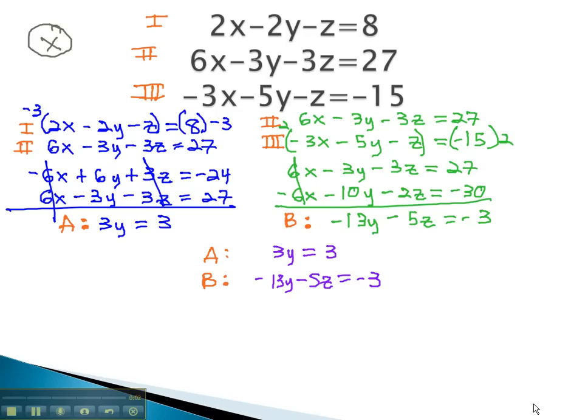In part one of this video, we began solving the system of equations with three variables. We had to multiply some equations by constants in order to get the opposites we wanted to eliminate the same variable twice.